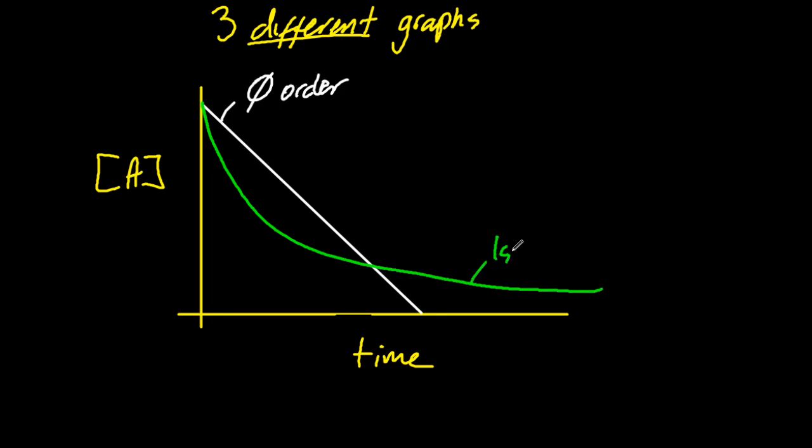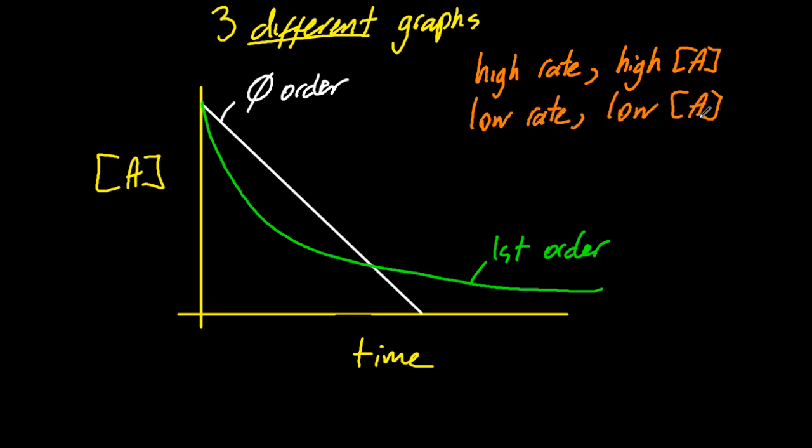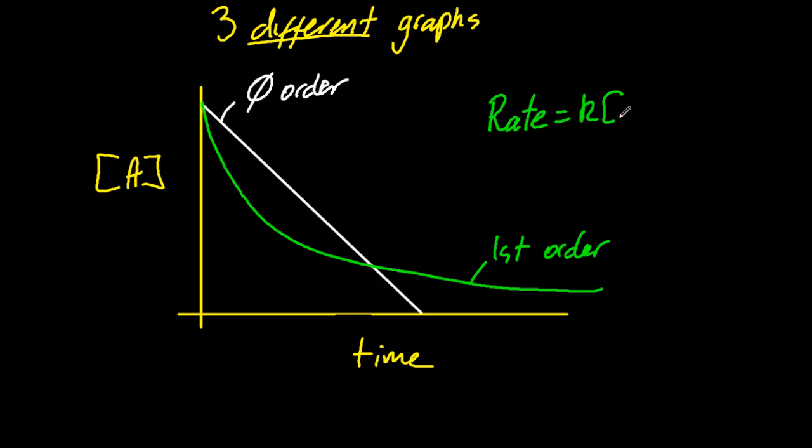First order, that's a first order. It's supposed to be a smooth curve there. And you can see, again, the gradient is the rate. That at high concentrations of A, there's a high rate. And at low concentrations of A, there's a low rate. That's different to before. The rate didn't change at all. Now the rate's changing. So a high rate, high A concentration. A low rate, low A concentration. So there's a relationship between the rate and A, unlike before. They were independent. So rate is K A to the 1 in this case. It's an A to the 1 relationship.